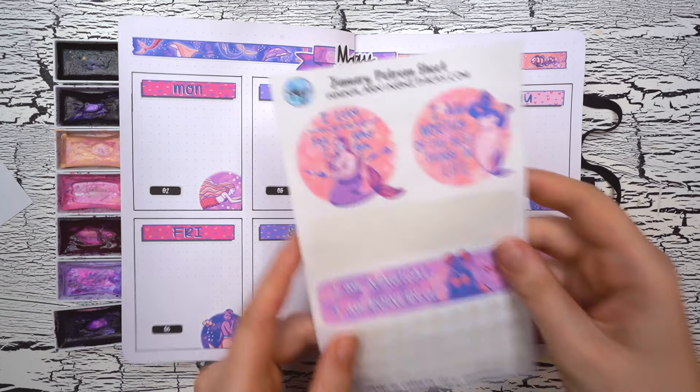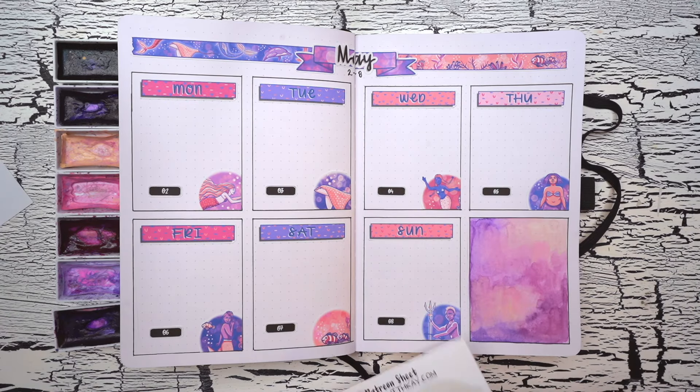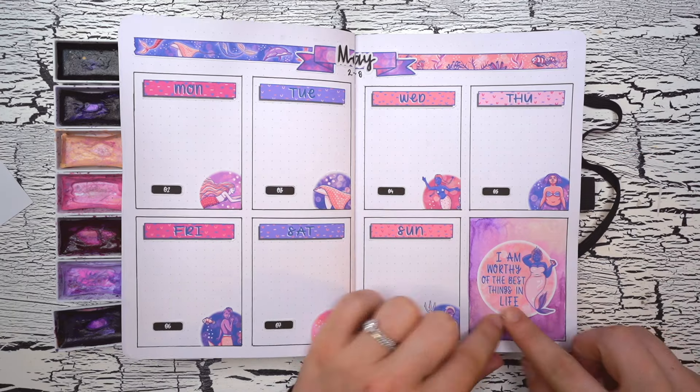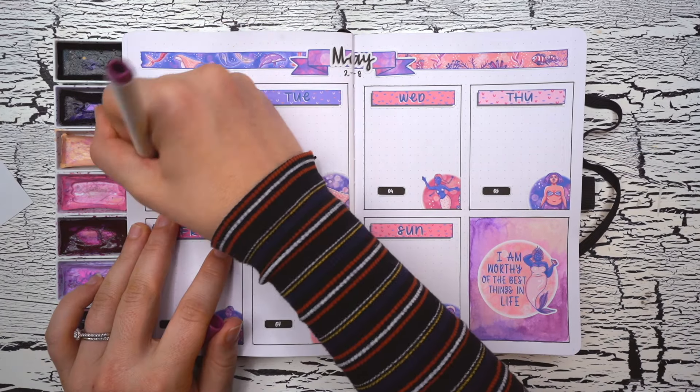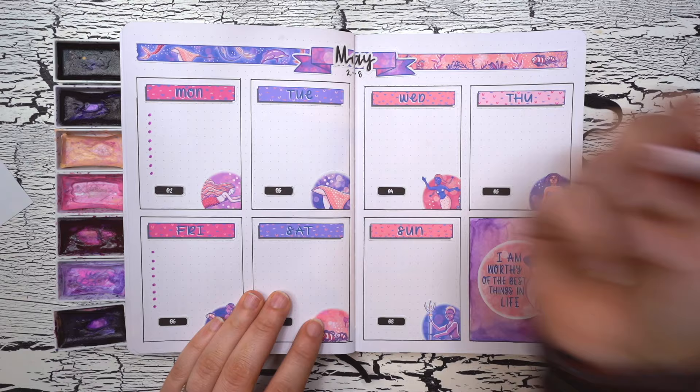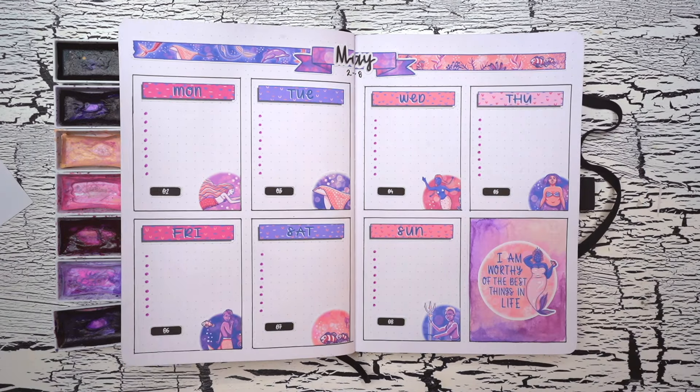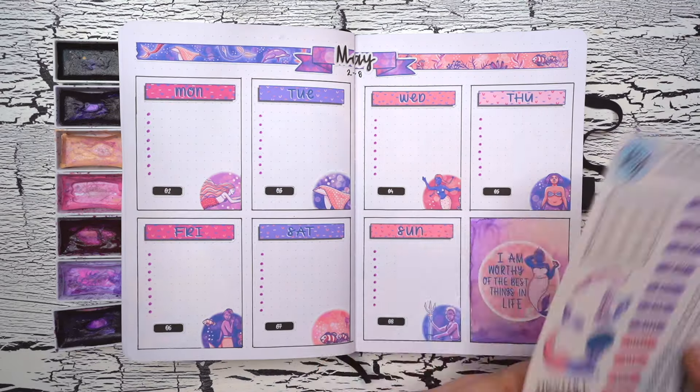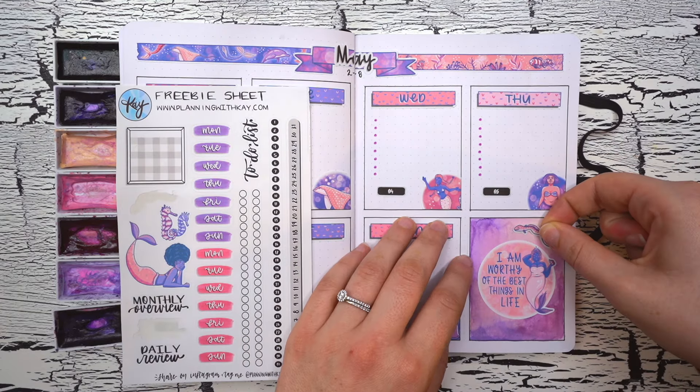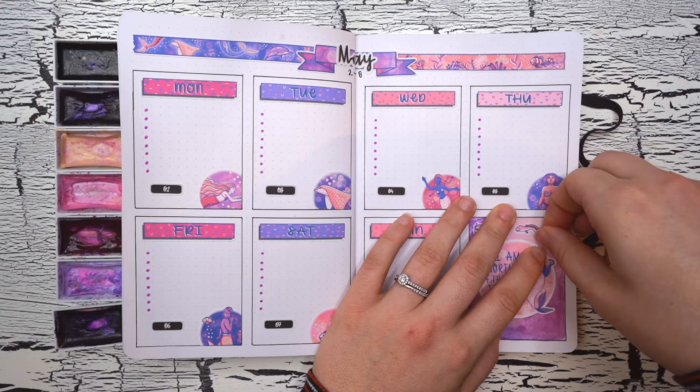With that, I just have a couple extra details. Firstly, another mermaid affirmation sticker in that empty watercolor space, and this one says, I am worth the best things in life. And finally, some bullets for my task lists using a Crayola marker again. That is it for this weekly spread, and I'm officially all ready for May in my bullet journal.